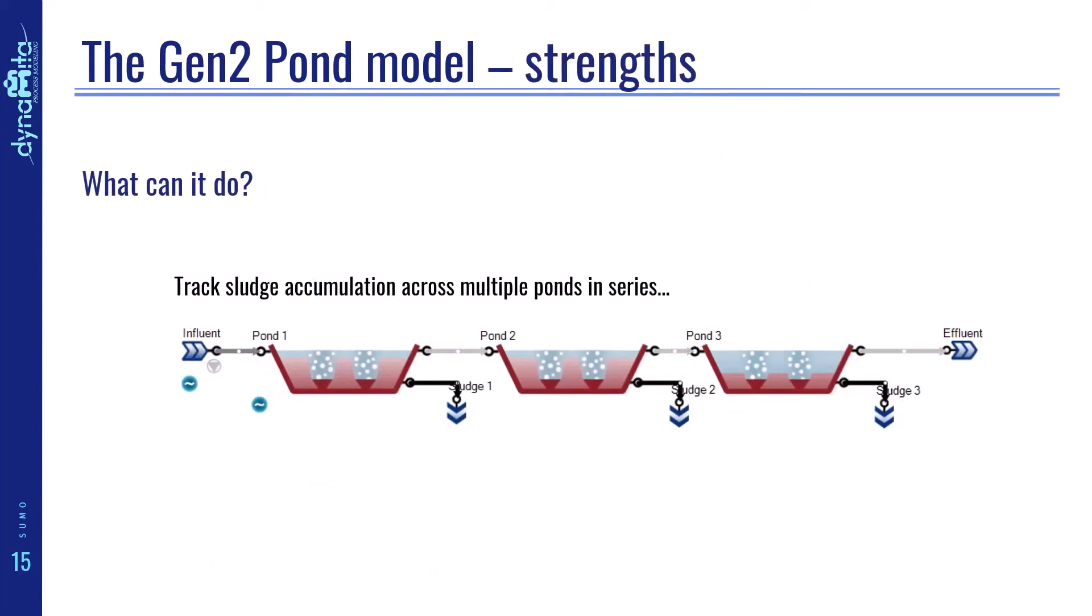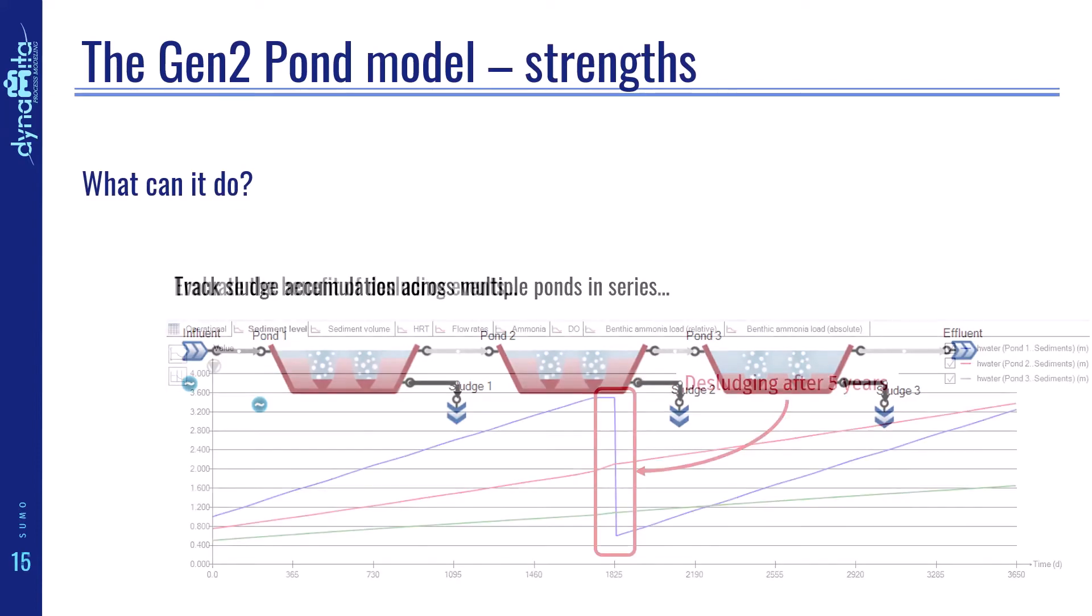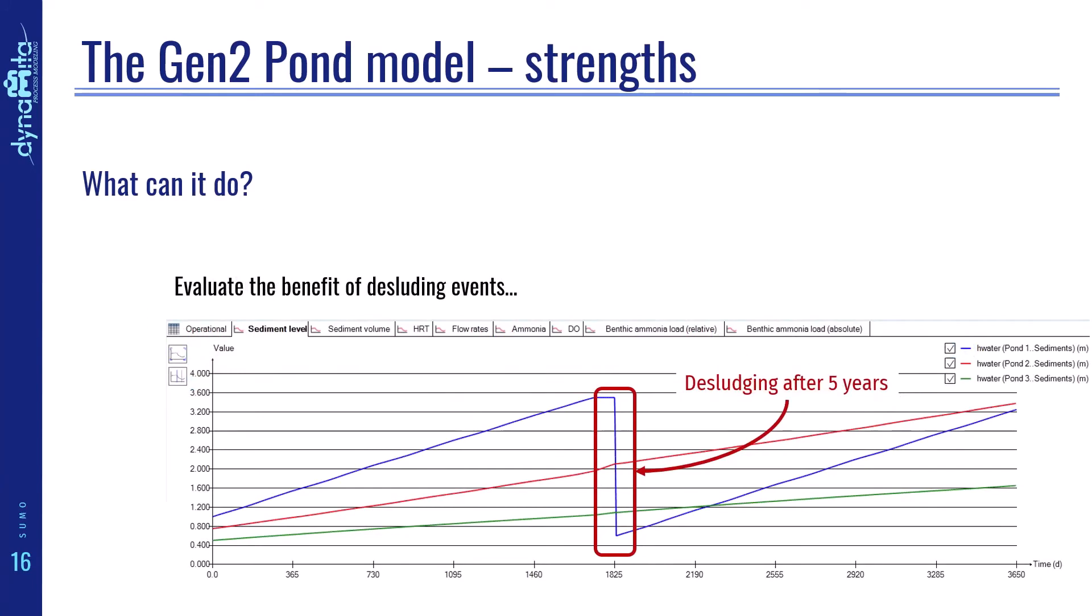But what can it do? For one, it can track the sludge accumulation across multiple ponds in series, as we see here, and evaluate the benefit of desludging events. As shown in this chart, the change in the depth of sediments across the three ponds after a desludging event.